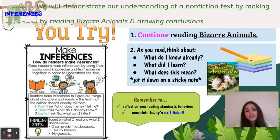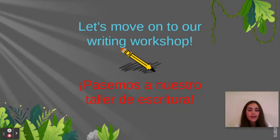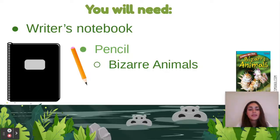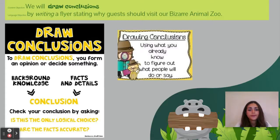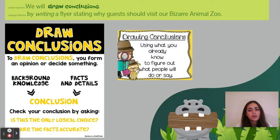Remember to reflect on your reading stamina and behaviors and to complete today's exit ticket. And now let's move on to our writing workshop. Today you will need your writer's notebook, pencil, and your Bizarre Animals book. Our objective for today is that we will draw conclusions by writing a flyer stating why guests should visit our bizarre animal zoo.